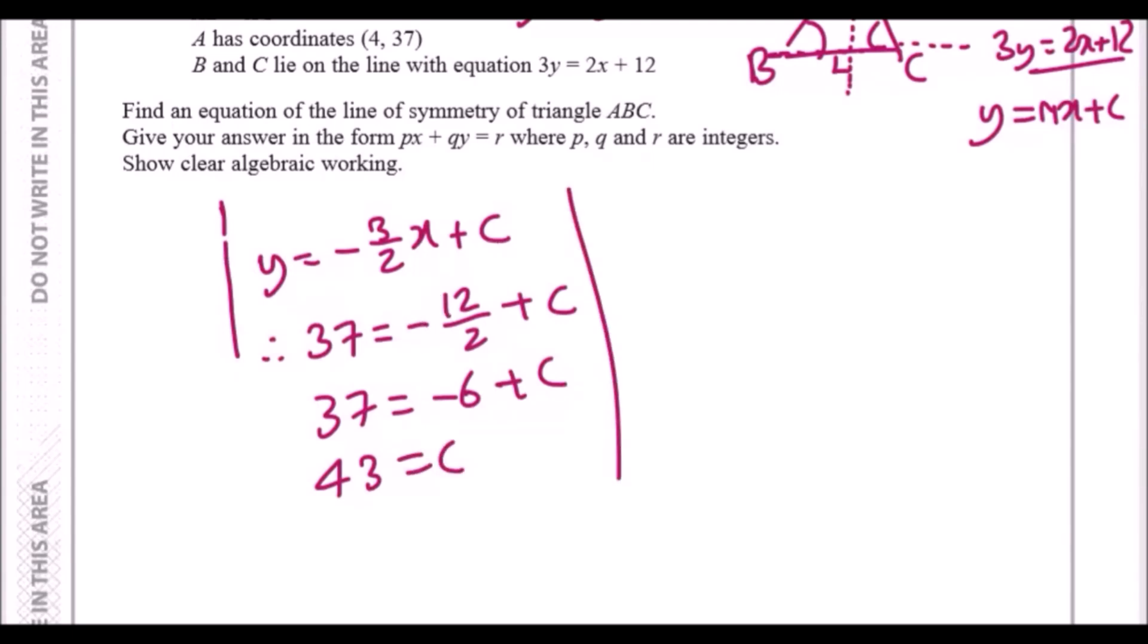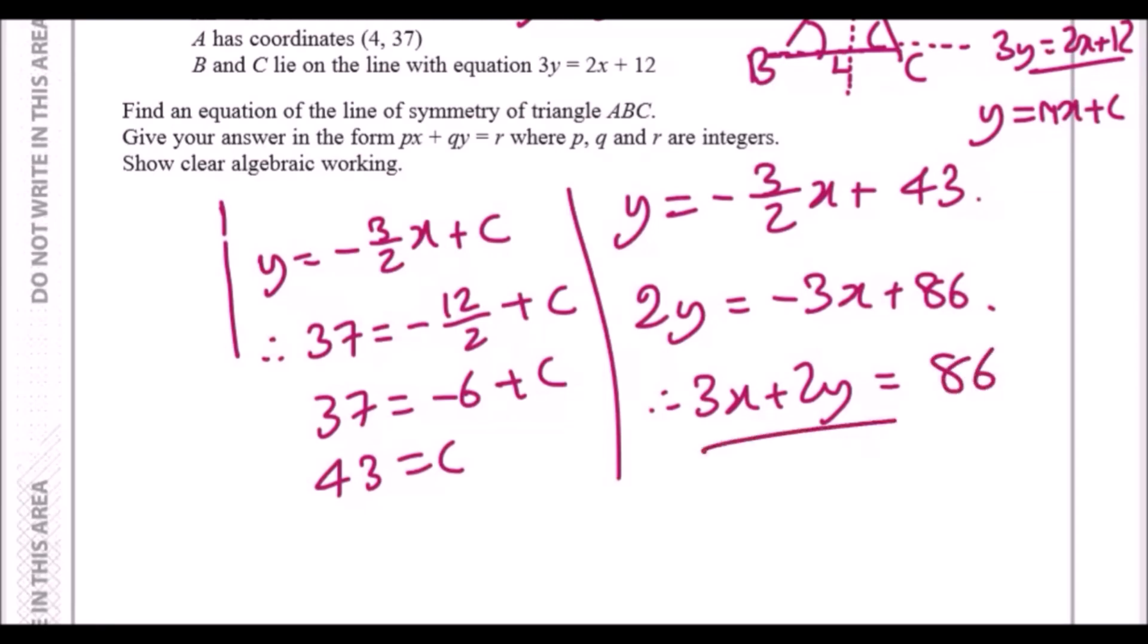Putting it back in the usual form: y = -3/2 x + 43. The form they want is an integer form where p, q, and r are whole numbers. To do that, clear the fraction by multiplying by 2 across: 2y = -3x + 86. They want it in px + qy form, so adding 3x across gives us 3x + 2y = 86.